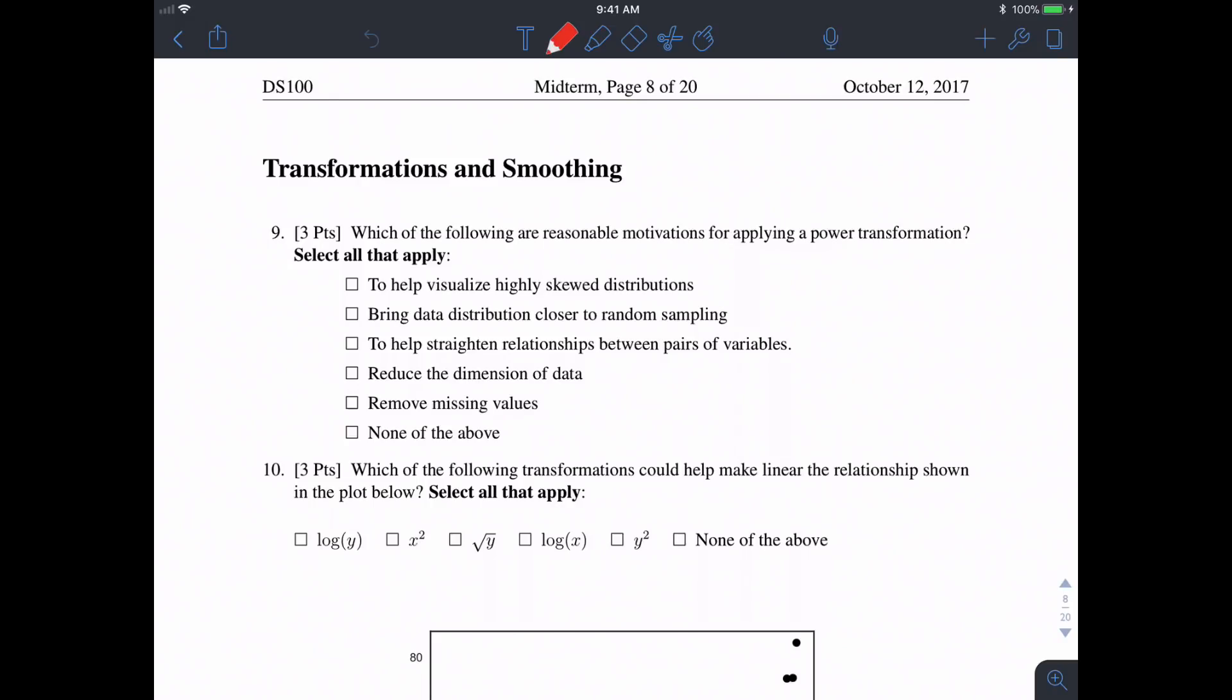Now let's take a look at questions 9, 10, and 11, which represent the transformations and smoothing part of the exam. First, in question 9, which of the following are reasonable motivations for applying a power transformation?